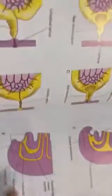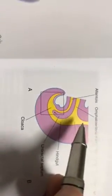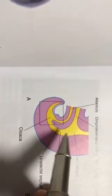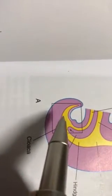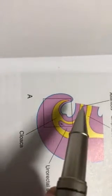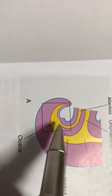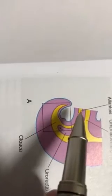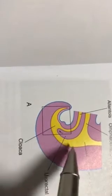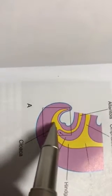Now I will go to the hindgut. For the hindgut, you should know one word: endodermal cloaca. This is your gut — foregut, midgut, and last we come to the hindgut area. The hindgut opens into the cloaca, which is called the endodermal cloaca. Yellow color means endodermal. Anteriorly you have the allantois, which is for excretion of urine. Both the allantois and the hindgut open into the endodermal cloaca.